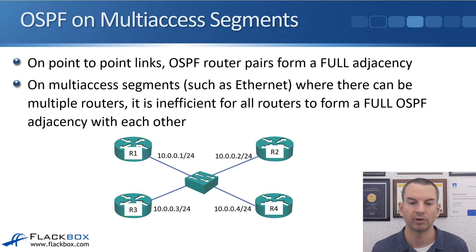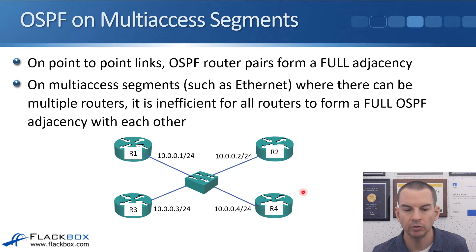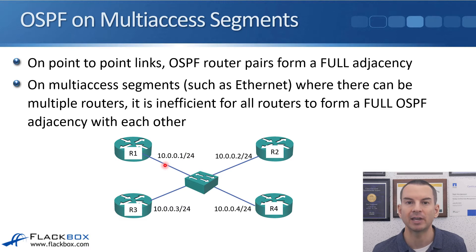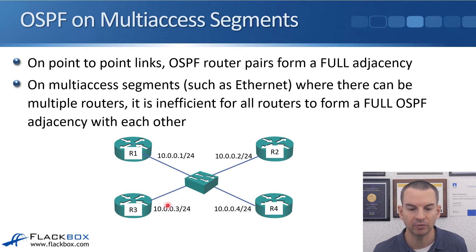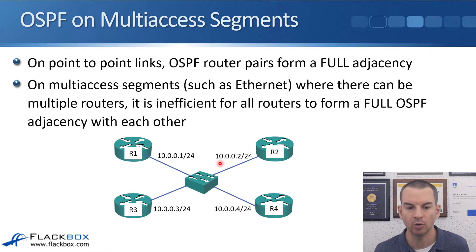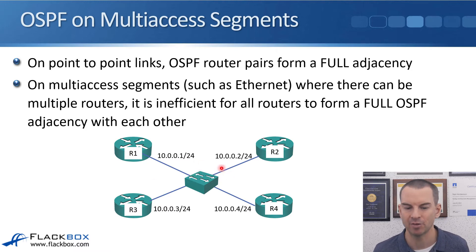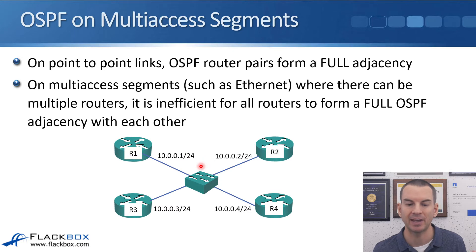But on multi-access segments such as Ethernet, where there can be multiple routers, it's inefficient for all routers to form a full OSPF adjacency with each other. In the example, I've got an Ethernet segment with four routers — R1 with 10.0.0.1/24, R2 with .2, R3 with .3, and R4 with .4 — all plugged into a switch in the same IP subnet with OSPF enabled. It would be inefficient if they all shared full information with each other in a full mesh, because there would be a lot of repetitive information sent out onto the same link.